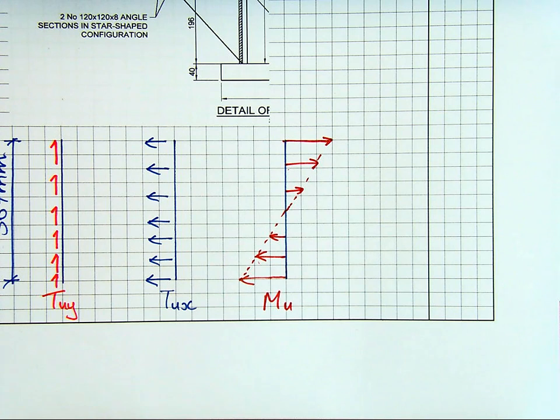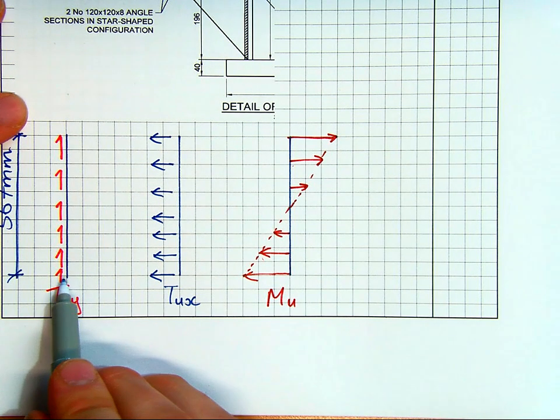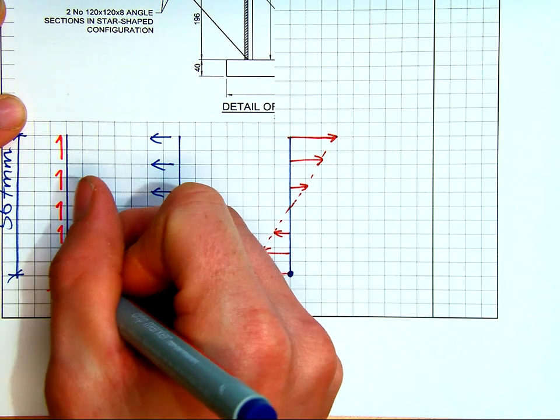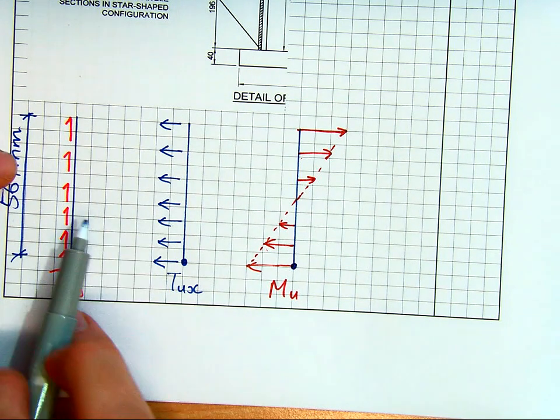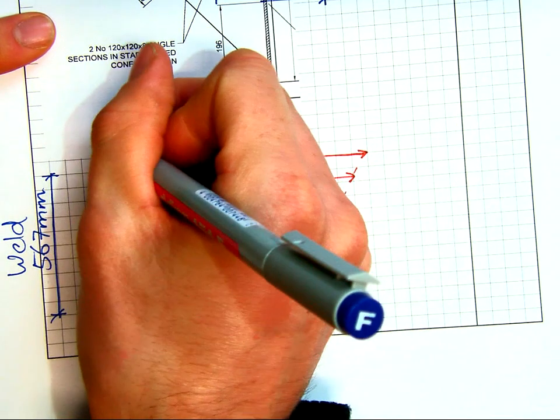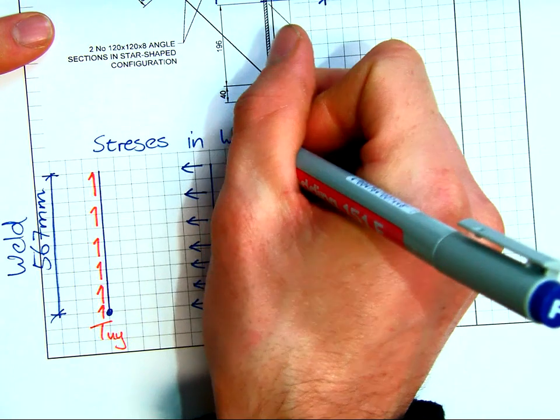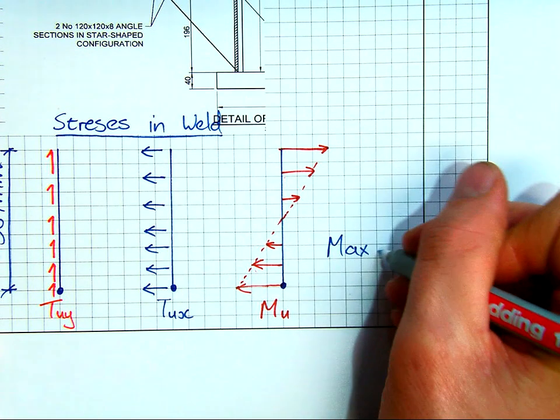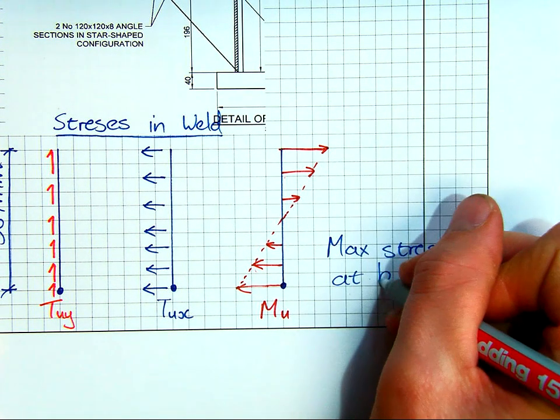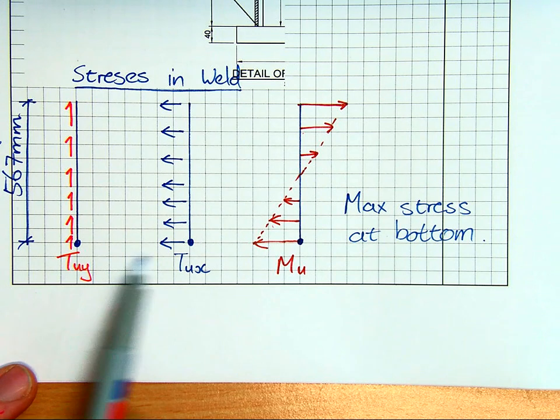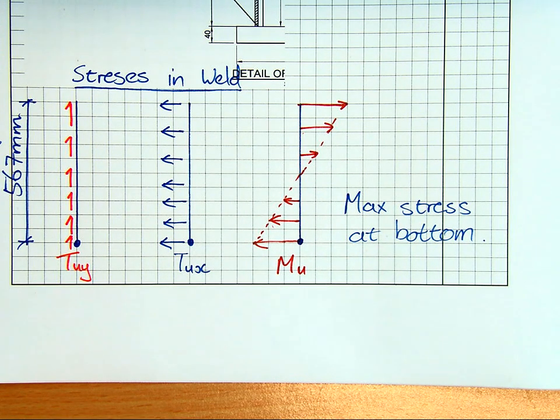So looking at that, we can quickly identify which is most stressed, which part, because we've got a vertical component horizontal. And taking the vector sums of these, we can actually see that that position is most critical. So we need to just check one position along this whole weld. As long as that stressed position is okay, then we're fine for our design. So this is stresses in weld. And therefore, the maximum stress is at the bottom, as I just mentioned, because of those three forces acting together.